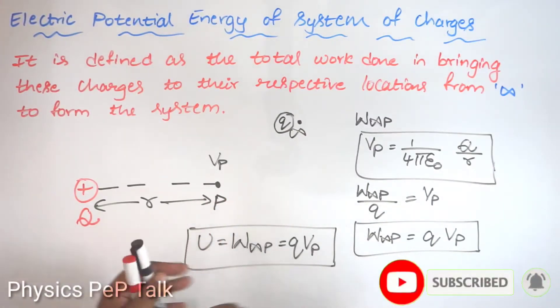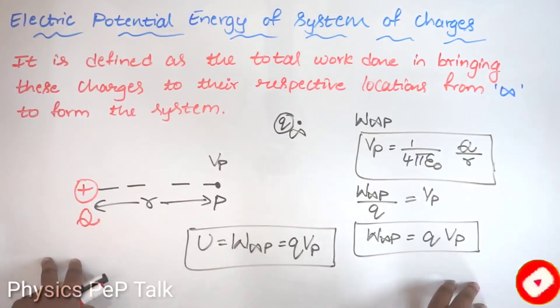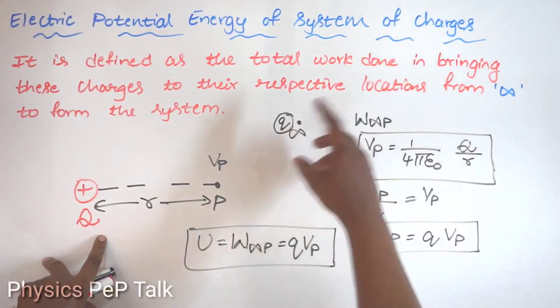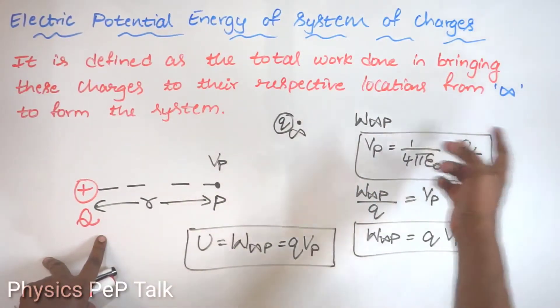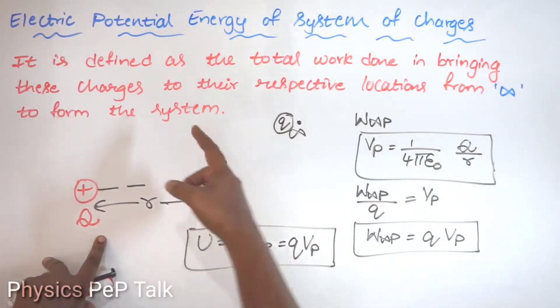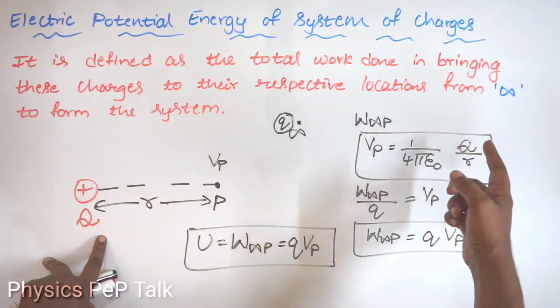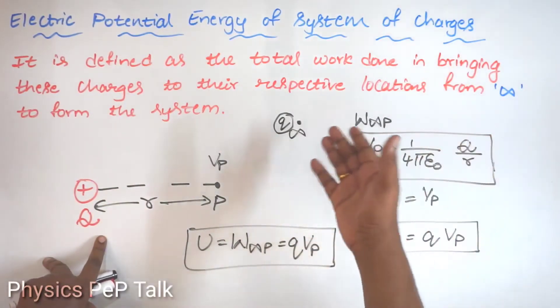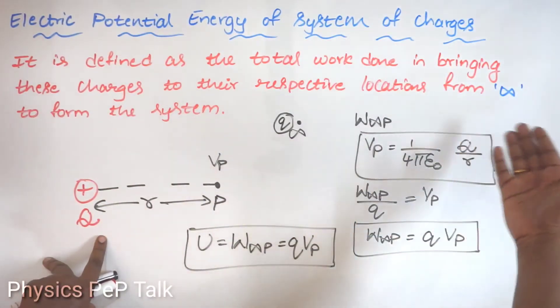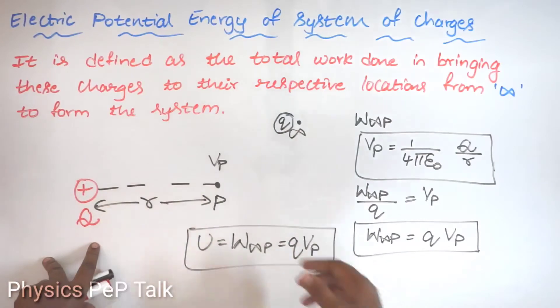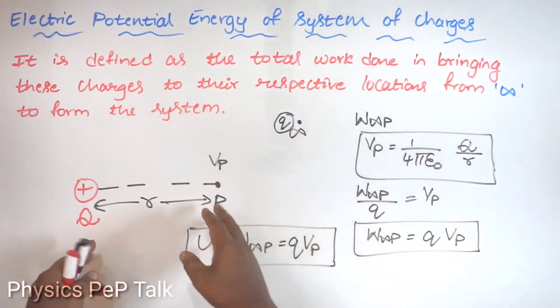It is defined as the total work done in bringing these charges to their respective positions — their respective locations from infinity — to form the system. First, let us consider the system.